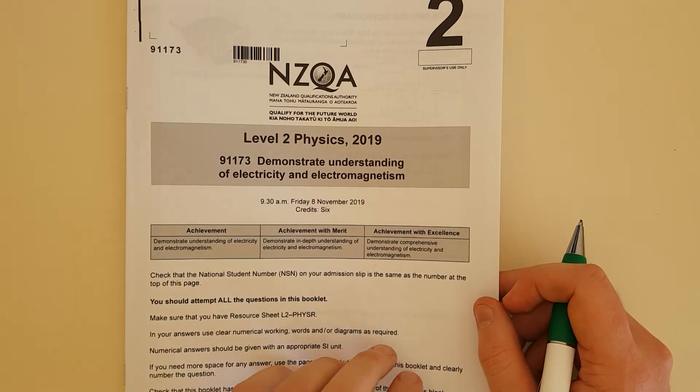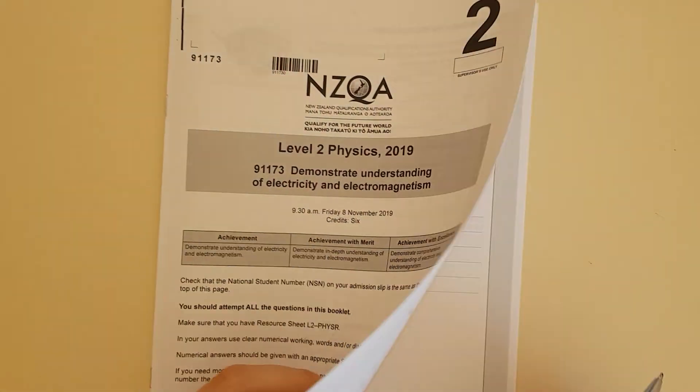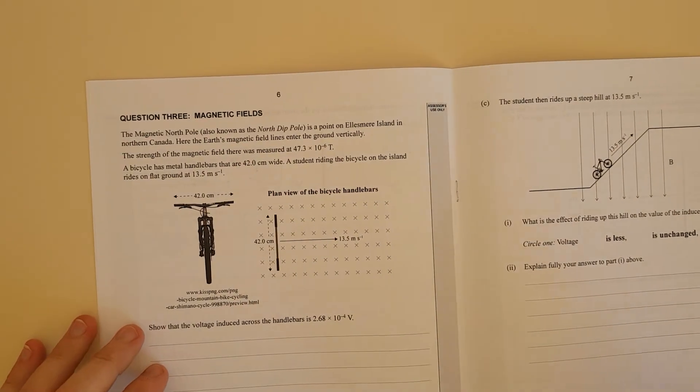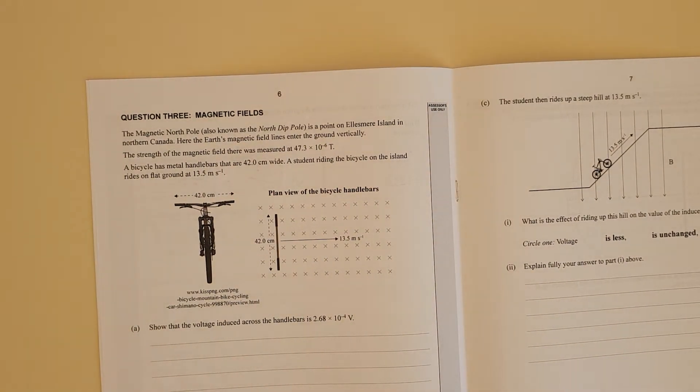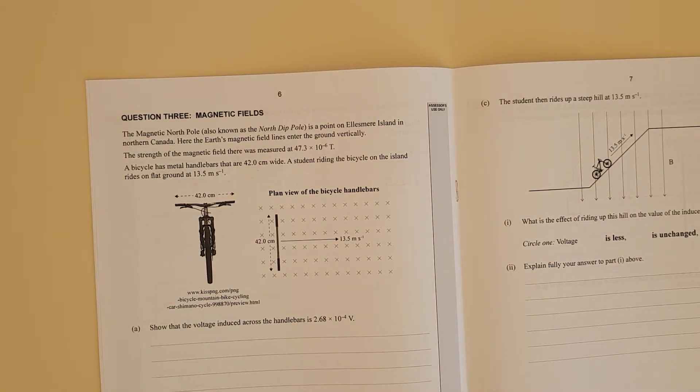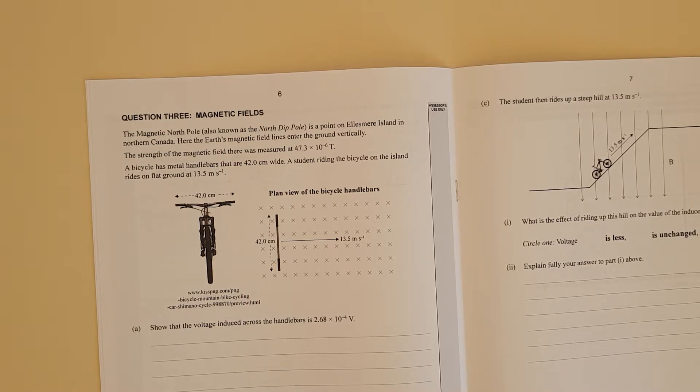The video is question 3 of the 2019 level 2 electricity exam. We've got question 3. Magnetic North Pole, also known as North Dip Pole, is on Point Ellesmere Island in North Canada. Here is the Earth's magnetic field lines entering the ground vertically. Strength of the magnetic field line is 47.3 times 10 to the negative 6 Tesla. The bike has metal handlebars at 42 centimeters wide.